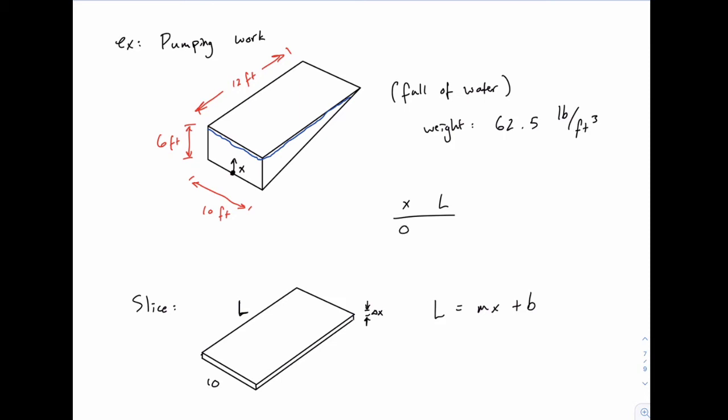When x equals zero at the bottom of the tank, we know that L equals zero. And when x equals six at the top of the tank, we know L equals 12. That's just based on the geometry of the picture we're given. Again, we know the tank is six feet high in total, and the longest length is 12 feet there at the top.